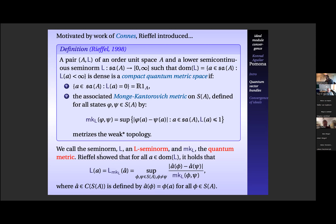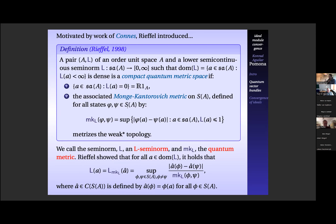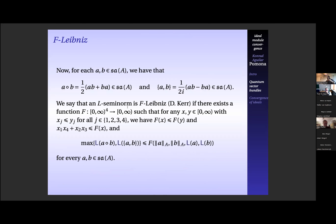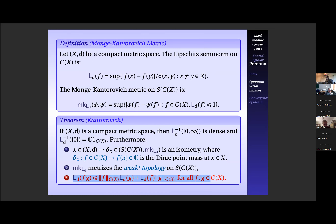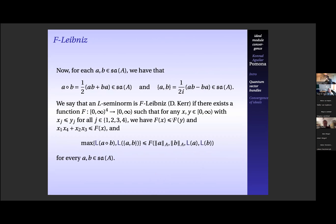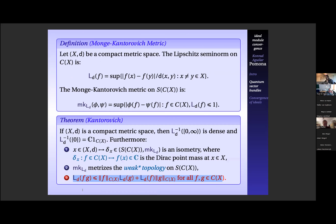What about the multiplicative structure? We've restricted ourselves to self-adjoint elements, so how are we going to capture any multiplicative structure? The idea is to have a sort of Leibniz rule. I believe David Kerr was the first to generalize this to something called F-Leibniz. This is a generalized version of the Leibniz rule for self-adjoint elements. There are L-seminorms that don't satisfy the standard rule — for example, the one we look at in this talk has a factor of two in front of the whole expression.